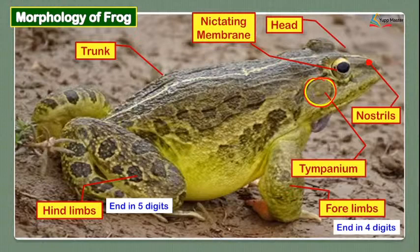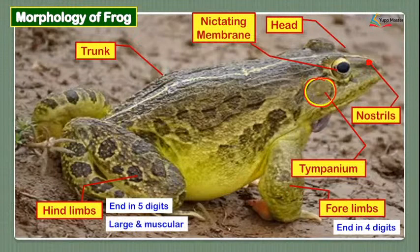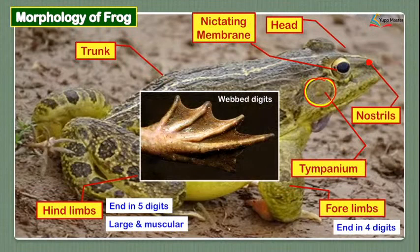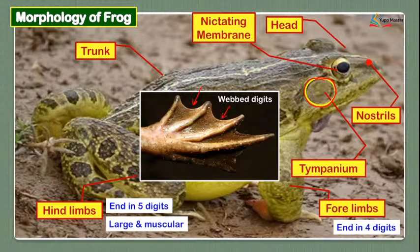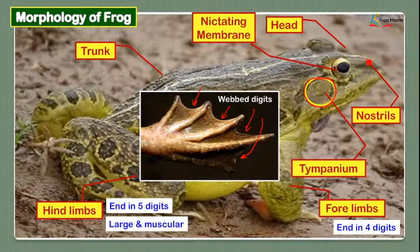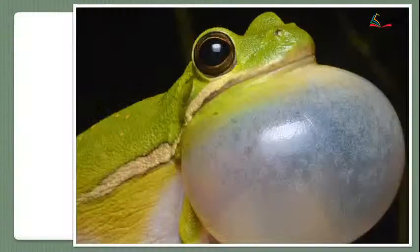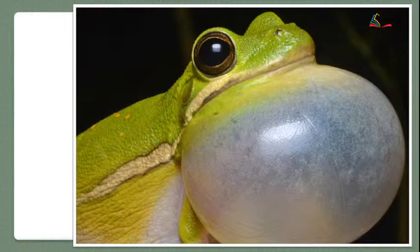The hind limbs are large and muscular. The digits have webs present between them, similar to what you observe in ducks. These webs help the frog swim — it is the presence of those webs that enables swimming.